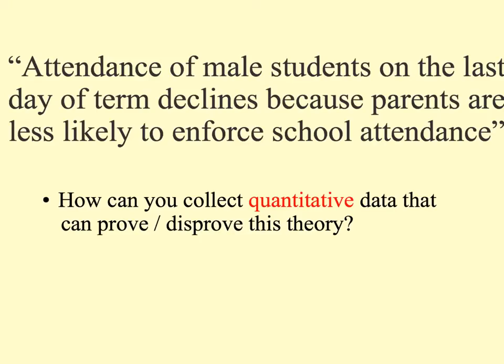Here is an example of a sociological hypothesis: attendance of male students on the last day of term declines because parents are less likely to enforce school attendance. Think about what you understand about quantitative data and quantitative research methods — how can you collect quantitative data that can prove or disprove this theory? And please consider whether the data you'd be looking at would be primary, i.e. you've collected it, or secondary, collected by another agency like the school, for example.